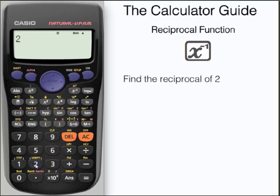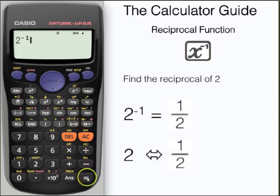We're going to find the reciprocal of 2. Input 2, then press x to the power of minus 1 and equals. And here we have the reciprocal of 2, one half. 2 and one half have a reciprocal relationship. One is the reciprocal of the other.